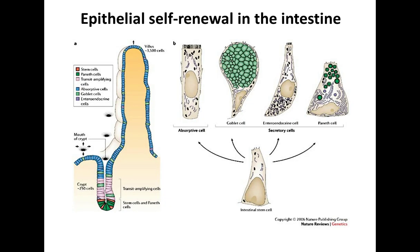In the gut, we have two distinctive structures. One is called the villus, where we have many absorptive cells and secretory cells that are important for digestion. These cells located in the villus are completely lost within a week, meaning that the entire tissue needs to be regenerated on a weekly basis. To have such regenerative capacity, we need adult stem cells that can replace this tissue.